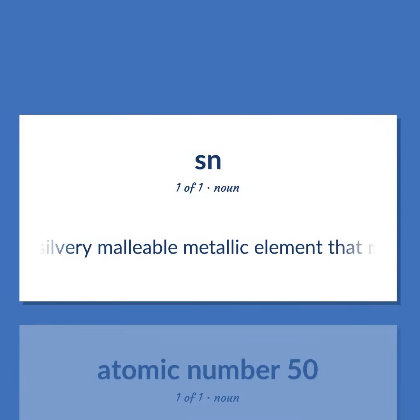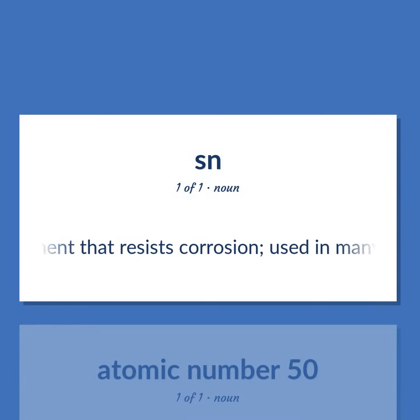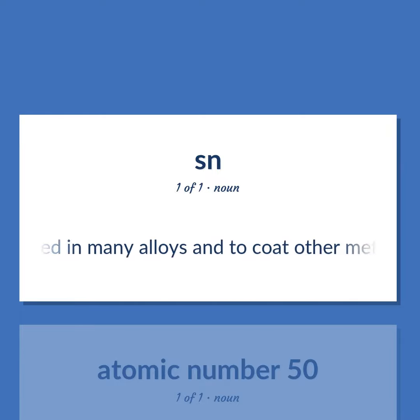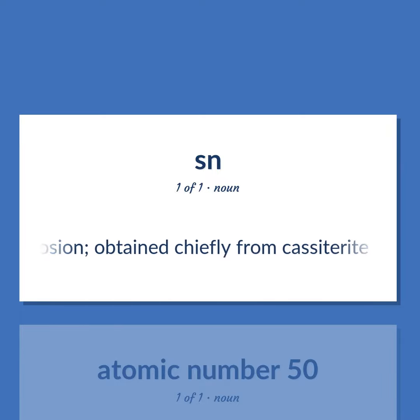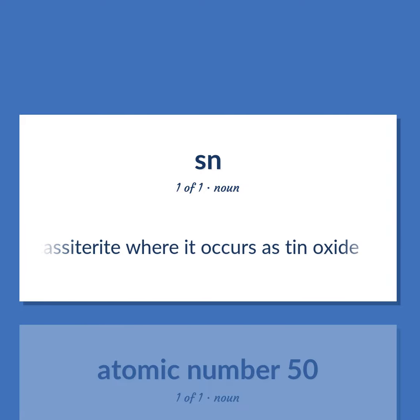A silvery malleable metallic element that resists corrosion, used in many alloys and to coat other metals to prevent corrosion, obtained chiefly from cassiterite where it occurs as tin oxide.